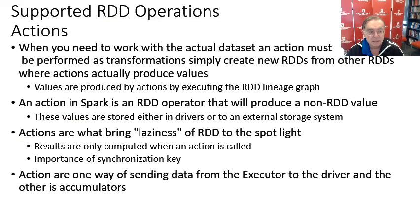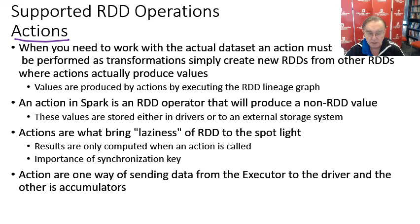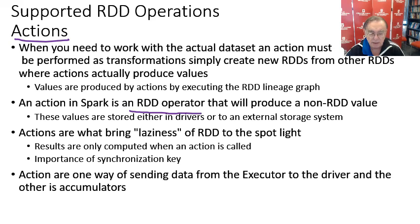As well as transformations, we have actions, and an action produces values. For example, a count — when doing a word count and getting numbers, if you're doing a Google search, the word count is produced by an action that produces data that could be displayed to the user. So it's an operator on an RDD that produces a non-RDD value.